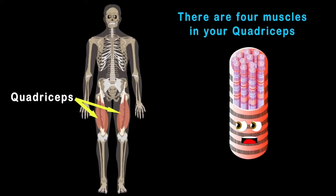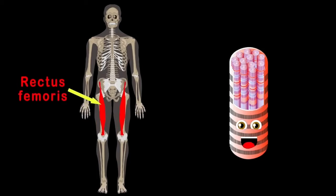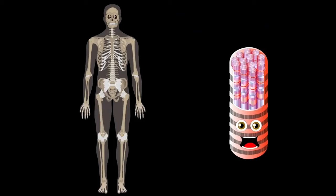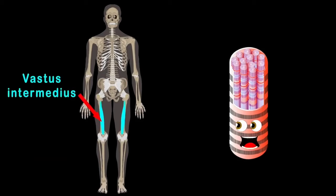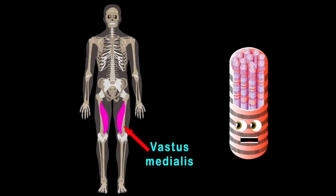The rectus femoris is the first muscle in line, while the vastus lateralis sits to the far outside. Vastus intermedius sits under the rectus, and vastus medialis makes the fourth in your quadriceps.